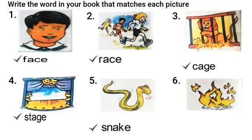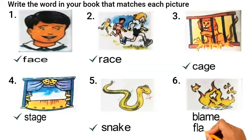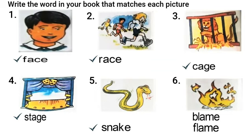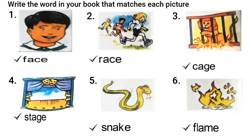And the last one. There are two words for this picture: blame and flame. You have already known that blame means to complain about others, and flame is the reddish-orange color of fire. So I think you got that, right? Yes, it will be 'flame'. So students, we have finished this exercise.